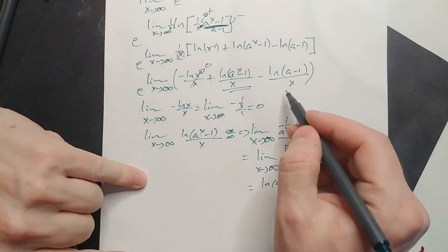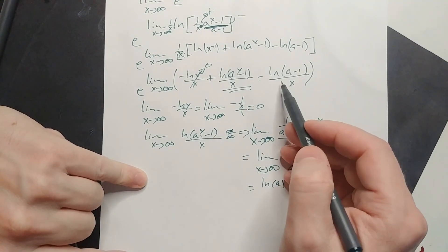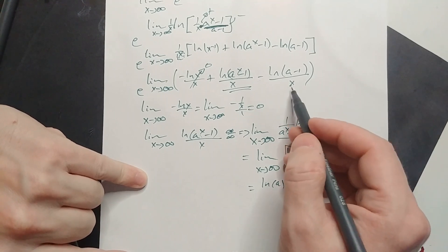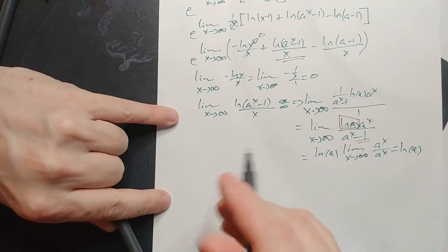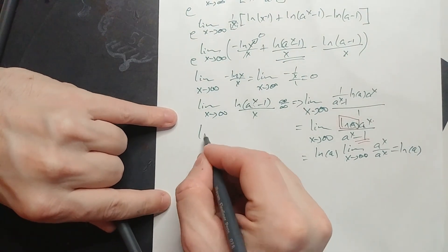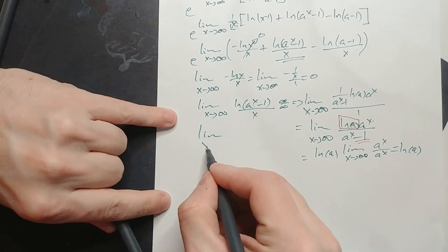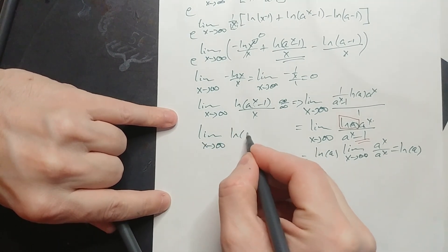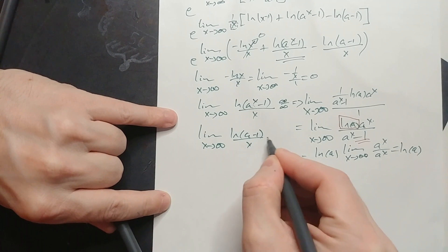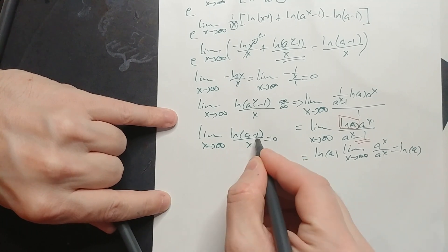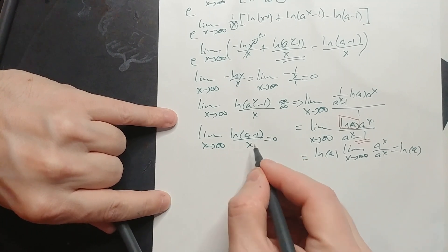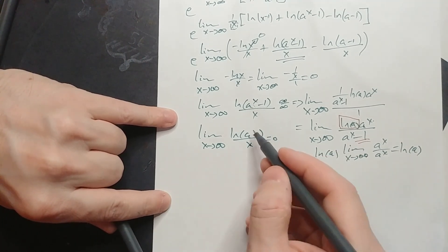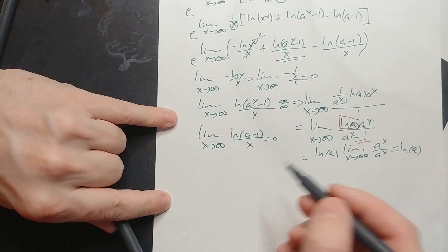For the last part, we have the limit as x approaches positive infinity of ln(a minus 1) over x. That's just a constant over x, so as x goes to infinity, this limit equals 0.